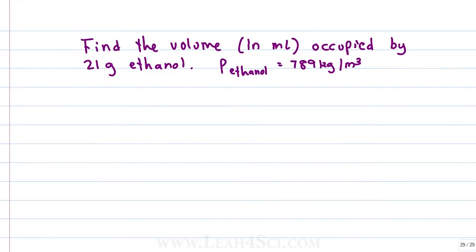Say you're asked to find the volume in milliliters occupied by 21 grams of ethanol, given that the density of ethanol is 789 kilograms per meter cubed. First figure out what you're asked for. We want to find the volume, we're given a mass and we're given a density. This should clue you in: density problem is equal to mass over volume, but we're asked to find the volume given everything else.